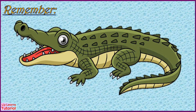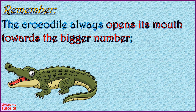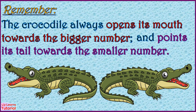When we compare two numbers using greater than and less than, we always think about the crocodile. Remember, the crocodile always opens its mouth towards the bigger number and points its tail towards the smaller number.